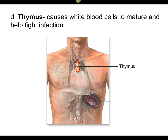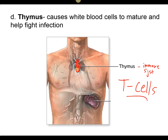The thymus is located right above the heart and kind of withers away as we get older. This is what makes our T cells activate and become mature, so it's very much linked to the immune system. Our thymus causes our white blood cells — specifically the T cells — to mature and help fight infection.